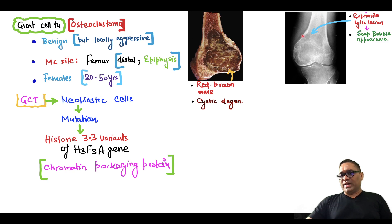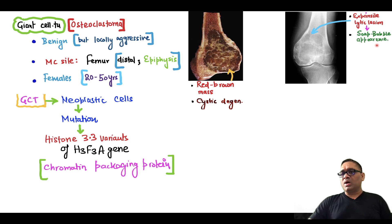On X-ray examination of the distal part of the femur, you can see there is an expansile lytic lesion, and that is the reason for the soap bubble appearance. These expansile lytic lesions give the characteristic soap bubble appearance.